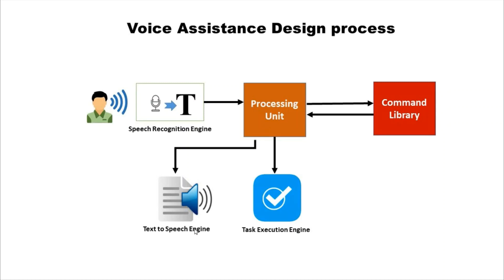The output then gets converted into audio using the text-to-speech engine. For example, if I say 'what is the current weather,' the speech recognition engine converts my voice to text, then the processing unit compares it and fetches the current weather details from the internet using an API call. Those details then get converted into audio using the text-to-speech engine so you can listen to the weather status.